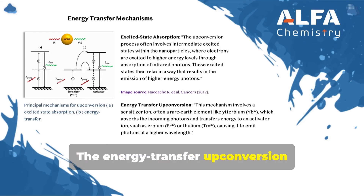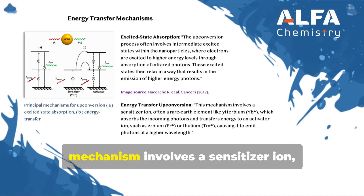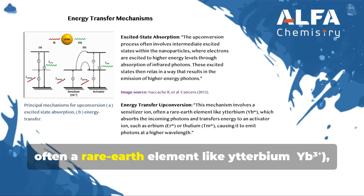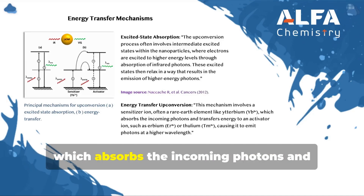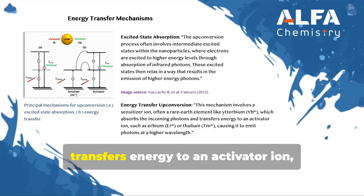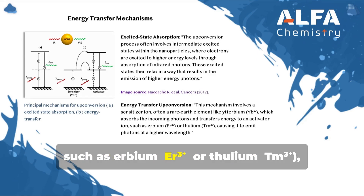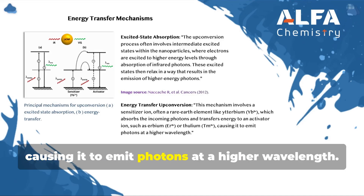The energy transfer up-conversion mechanism involves a sensitizer ion, often a rare earth element like ytterbium, YB3+, which absorbs the incoming photons and transfers energy to an activator ion, such as erbium, ER3+, or thulium, TM3+, causing it to emit photons at a higher wavelength.